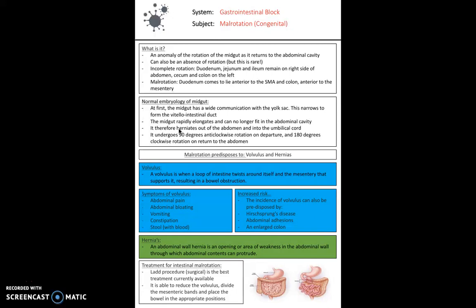Malrotation predisposes to volvulus and hernias. Volvulus is when a loop of intestine twists around itself and the mesentery that supports it, resulting in bowel obstruction, causing abdominal pain, bloating, and vomiting. Increased risk can be predisposed by malrotation, Hirschsprung's disease, abdominal adhesions, and an enlarged colon. Malrotation can also predispose to abdominal wall hernias — an opening or area of weakness in the abdominal wall through which the abdominal contents can protrude. Treatment is normally surgical with the Ladd procedure, currently the best accepted procedure.